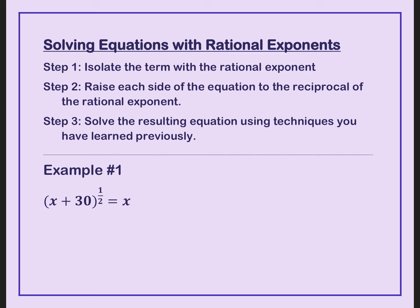So let's start with this problem. Whatever is being raised to the one-half power is already by itself. To eliminate a one-half power, we can multiply it by 2 over 1. But if I multiply that exponent by 2 over 1, I must also multiply the other exponent. I end up with x plus 30 equals x squared. So now I see I have a quadratic.